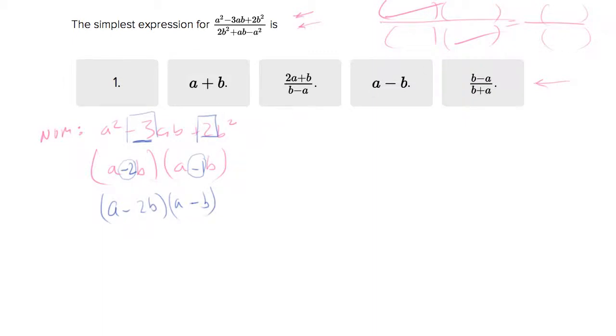Let's do now the denominator. Same way. We have two b squared plus ab minus a squared.